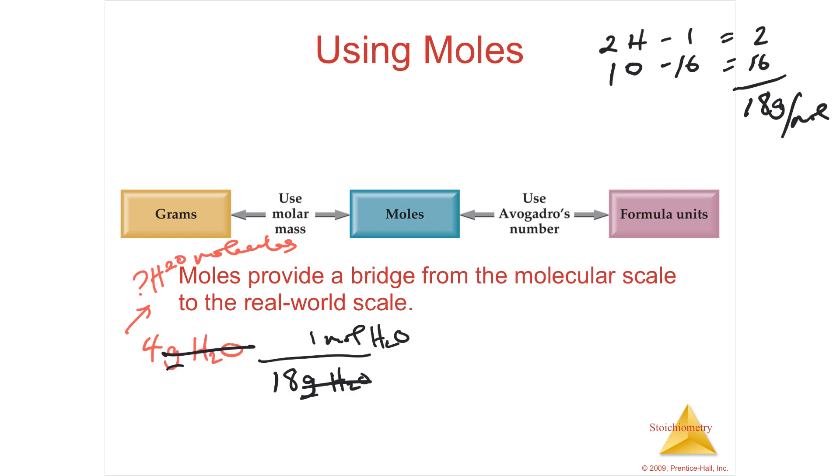4 divided by 18 is going to be 0.2222 moles of water. I'm here to here. I've got that. Now, I need to know how many molecules. That's formula units. Remember, that's either formula units for ionic bonds or molecules for molecular bonds. They're still called formula units because I have a formula here. H2O is a formula.